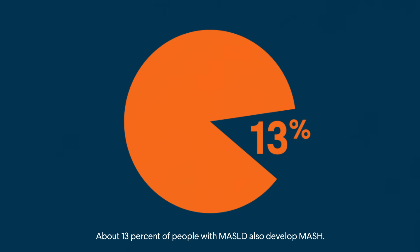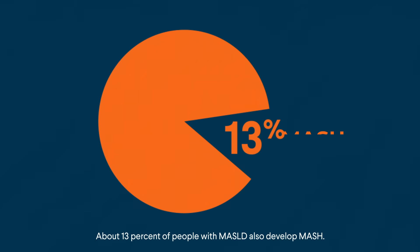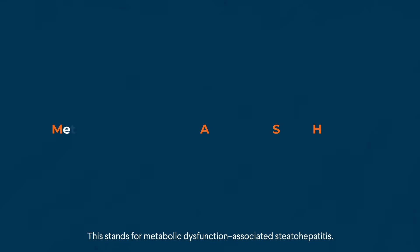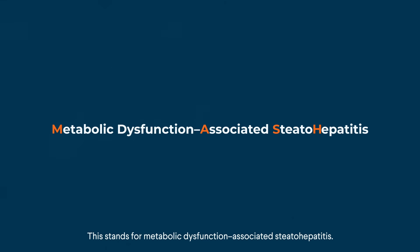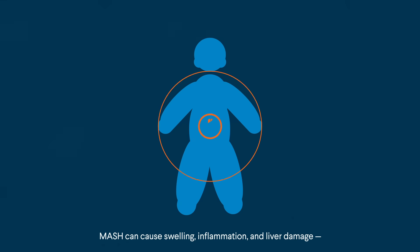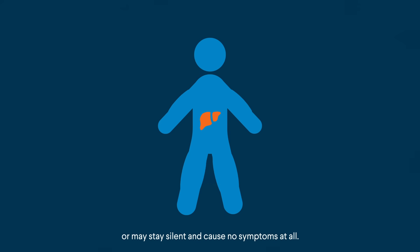About 13% of people with MASLD also develop MASH, which stands for Metabolic Dysfunction Associated Steatohepatitis. MASH can cause swelling, inflammation, and liver damage, or may stay silent and cause no symptoms at all.